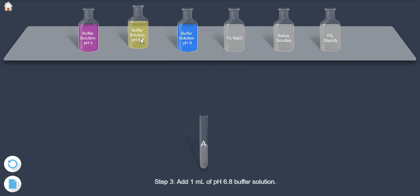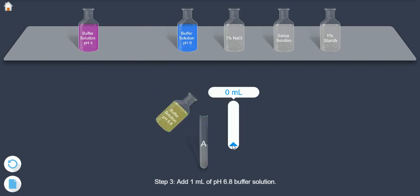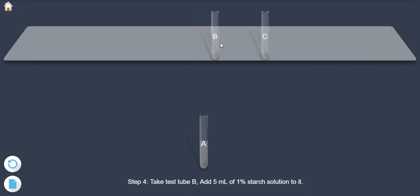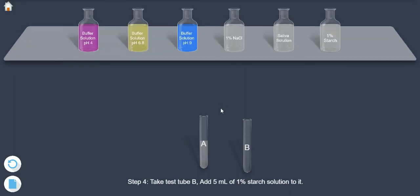Step 4: Take test tube B. Add 5 ml of 1% starch solution to it.